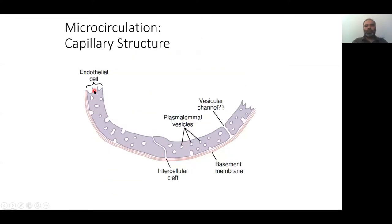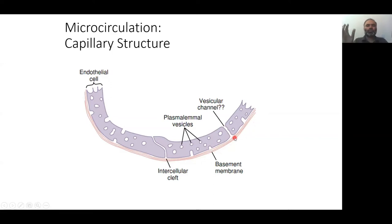This picture from Guyton shows the basic structure of the endothelial cell. Here is the basement membrane shown in red, and on top of it sits the endothelial cell — this is one endothelial cell, here is a second one, and a third one. Look at the intercellular cleft here — it can serve as a channel, and it sits on the basement membrane. In an average tissue, this is how the structure is.